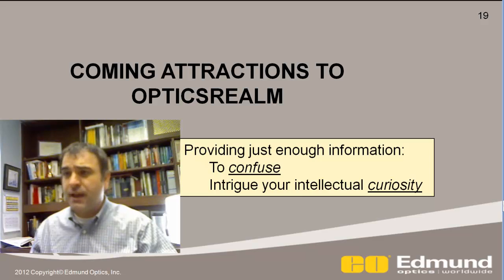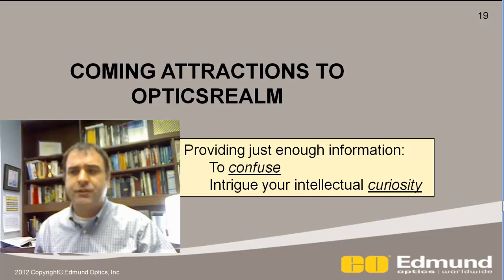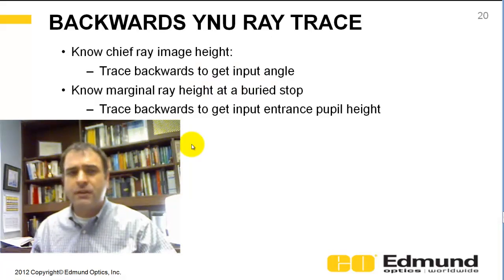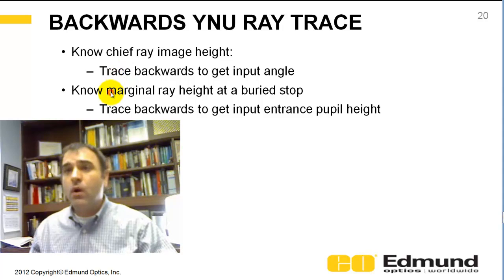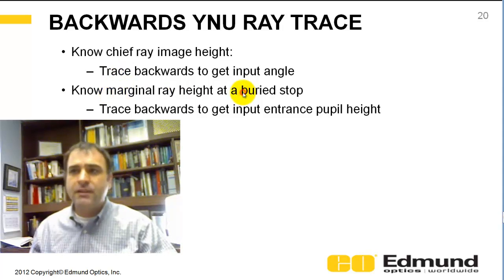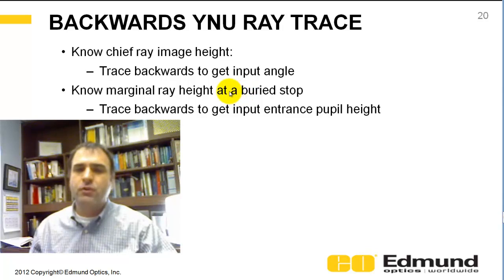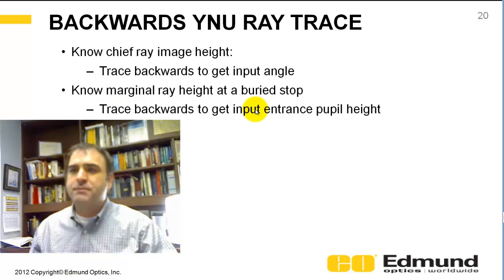Here are some coming attractions. We talked about forward ray tracing — you could also do backward ray tracing. Why? If you know the chief ray image height and want to know your system's field of view, you have to trace backwards. Or if your aperture stop is buried, like in a double Gauss, and you know the height but don't instantly know your entrance pupil height — your marginal ray in object space at the entrance pupil — you have to trace backwards from the stop.